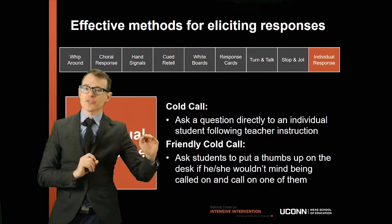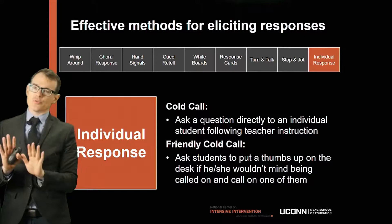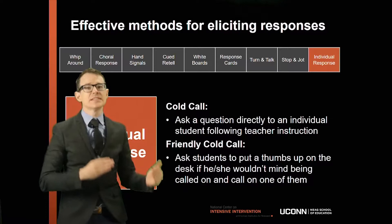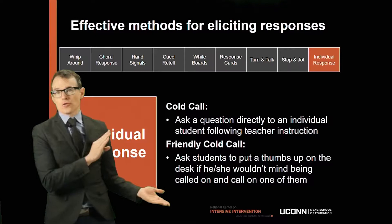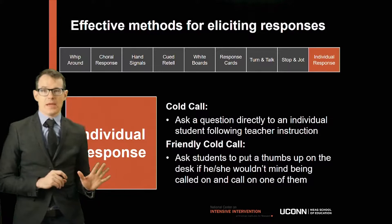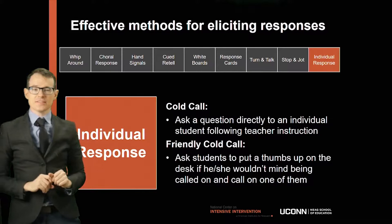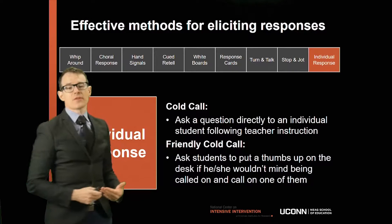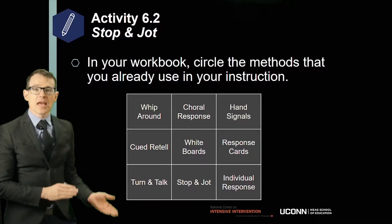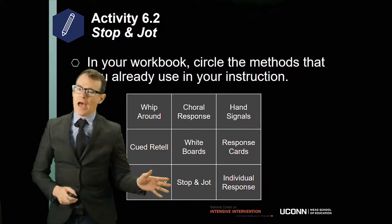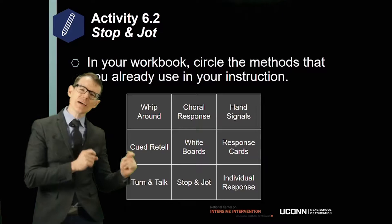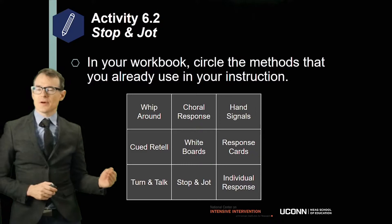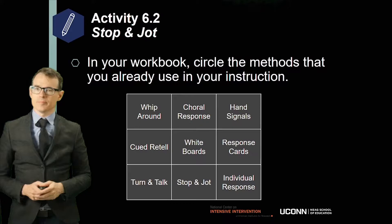An alternative I like for individual response is a cold call—a way to get students to very quickly give you answers. It only works well if students are prepared; it's a good way to activate prior knowledge but not a good way to have students tell you something they may not understand yet. One approach is a 'friendly cold call': students put a thumb on the desk to indicate they feel prepared to answer without raising hands and distracting the airspace of the lesson. This way you can call on students without putting them on the spot if they're not ready. Pause the video and in your workbook circle the methods you already use—circle twice the ones you use a lot, add a question mark for ones you're unsure about, and leave blank the ones you don't use. That'll give you a hint about what you might want to change.